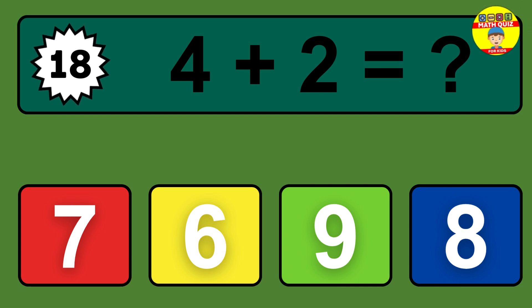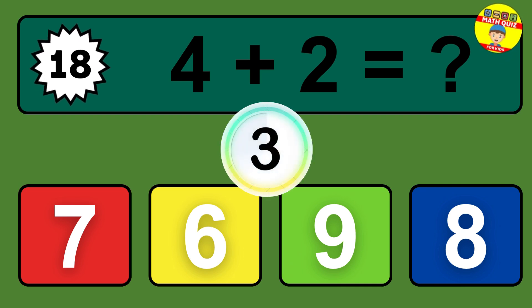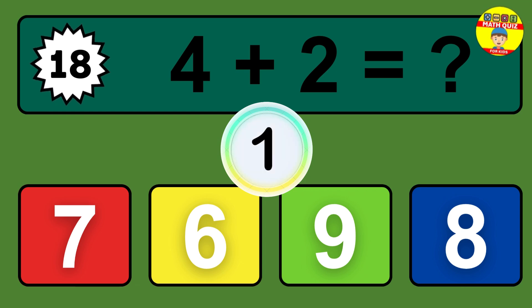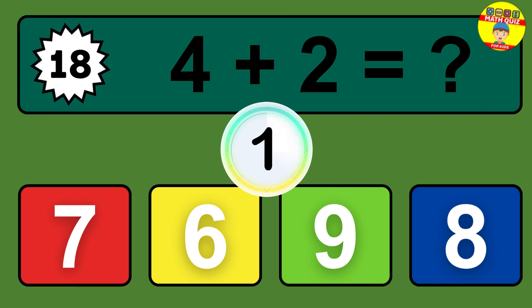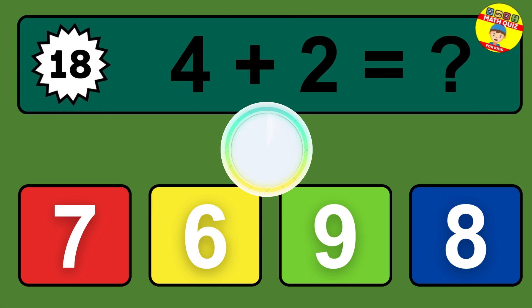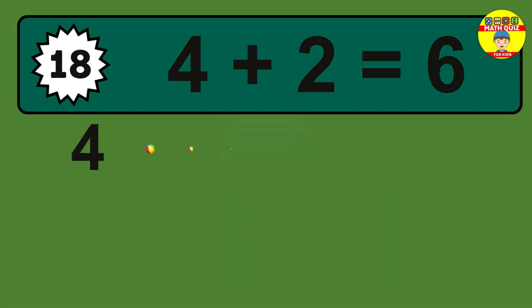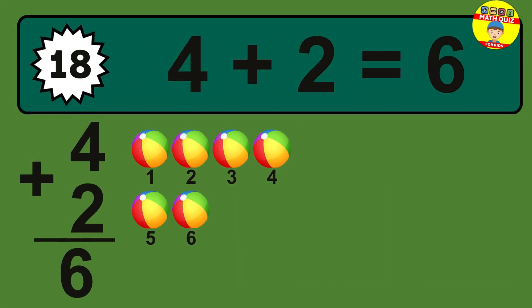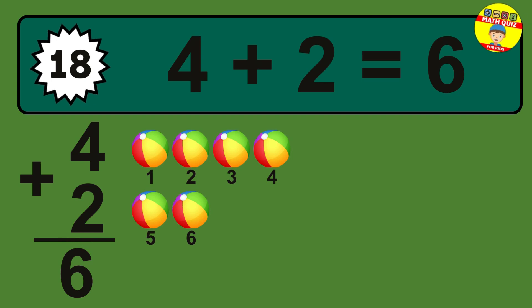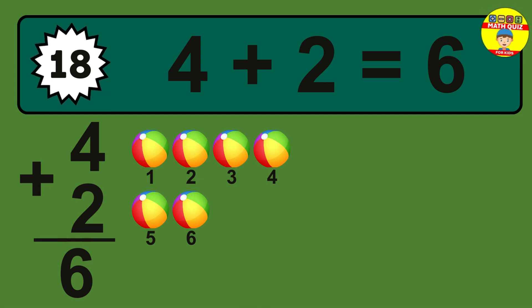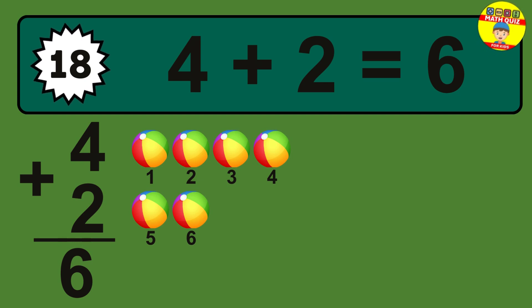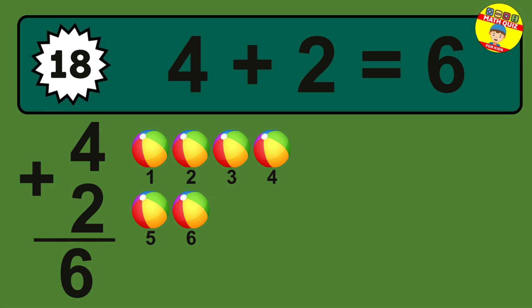Question 18. 4 plus 2 equals what? The answer is 4 plus 2 is 6. Let's count it: 1, 2, 3, 4, 5, 6.